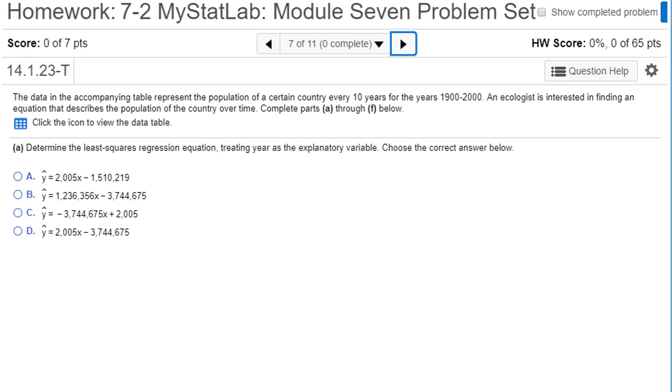We're looking at another problem here. The data in the accompanying table represents the population of a certain country every 10 years for the years 1900 to 2000. An ecologist is interested in finding an equation that describes the population of the country over time. We've got data and we want to find a least squares regression equation treating year as explanatory.